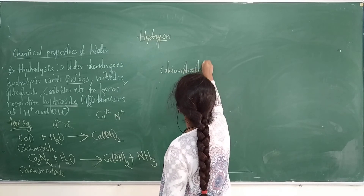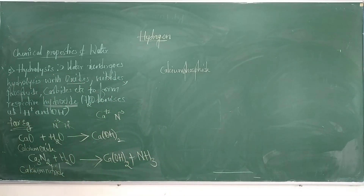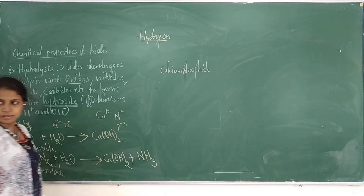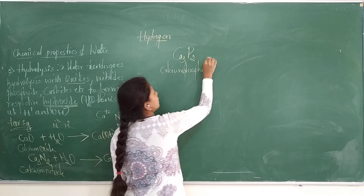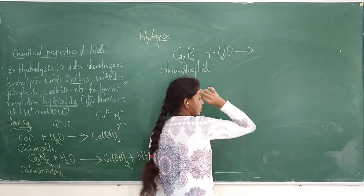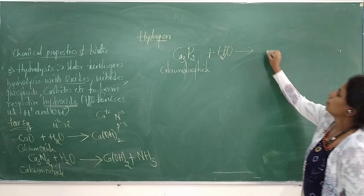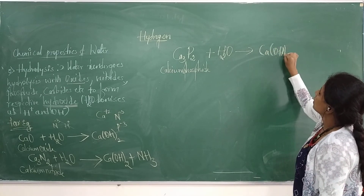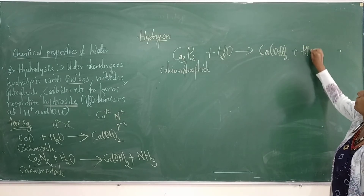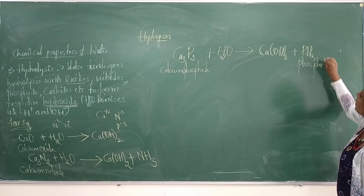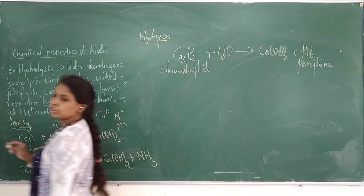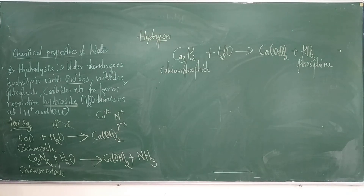If it is calcium phosphide (Ca₃P₂), it undergoes hydrolysis with water to produce Ca(OH)₂ — calcium hydroxide — plus PH₃, which is phosphine. Nitrogen hydride is ammonia; phosphorus hydride is known as phosphine. In general, water undergoes hydrolysis with many compounds to form their respective hydroxide.